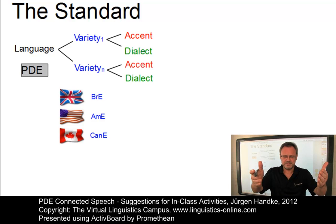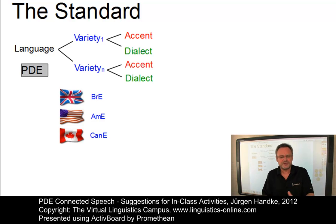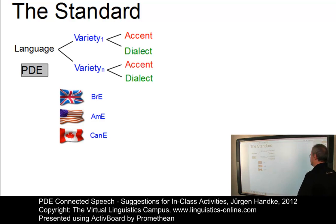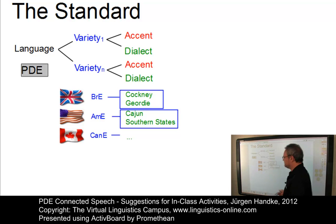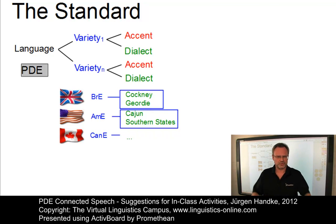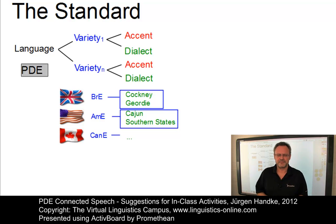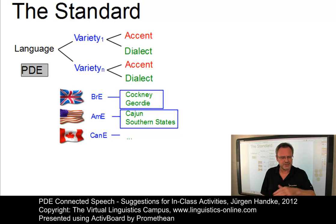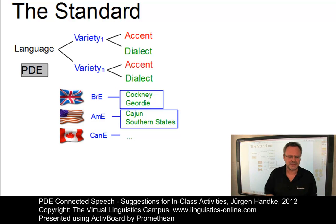Do you know the difference between them? Dialects are varieties of a language that differ from the standard in terms of phonology, morphology, syntax, vocabulary — all sorts of aspects. Examples include Cockney and Geordie in British English, and Cajun English and Southern English in American English — a wider dialect which encompasses many southern states.